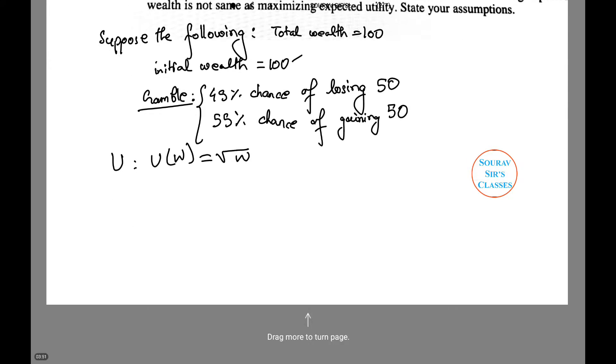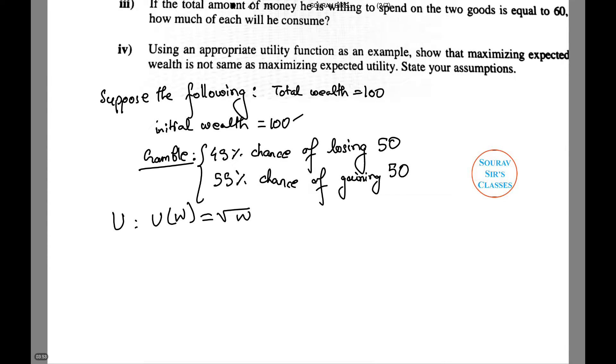Suppose X, the individual, takes the gamble. Then the expected wealth equals 55% times 150 plus 45% times 50, which equals 102.5. This is because when he wins, he has 150 wealth; when he loses, he has only 50 wealth left.